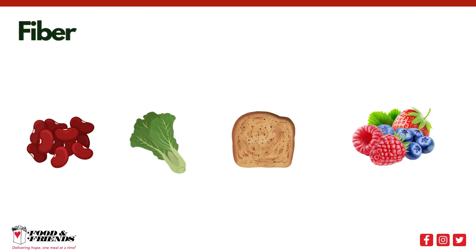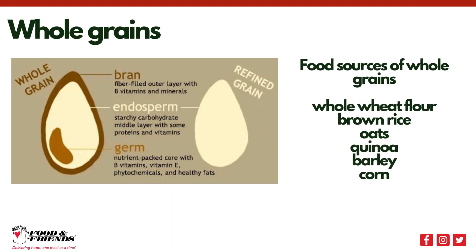Fiber is another type of complex carbohydrate. Our bodies are unable to completely break down and digest fiber. Fiber is found naturally in fruits, vegetables, grains, and beans. Whole grains are grains that contain all the edible portions of the grain, including the endosperm, germ, and bran. Whole grains have more fiber and vitamins and minerals than refined grains.